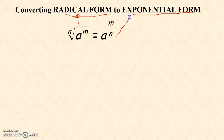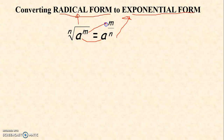A raised to m over n is the equivalent exponential form. Try to observe: your 'a' as the radicand will be your base. The exponent of a, which is m, is the numerator of the exponent. And your index is the denominator of the exponent. It seems so easy. Let us try examples.